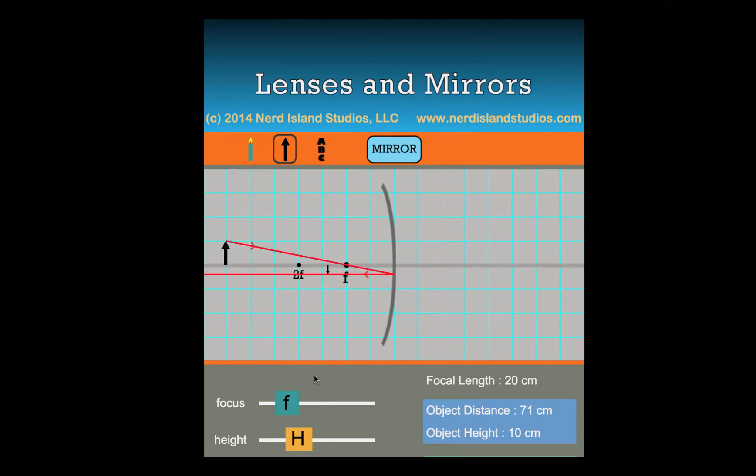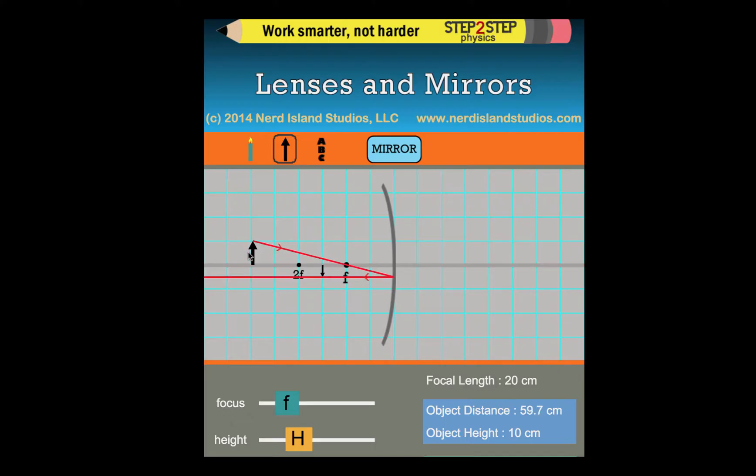Click on ray two. We watch ray two. It goes through the focal point until it hits the mirror. And once it hits the mirror, it comes out parallel. And it doesn't matter where I'm moving it. When I get to the focal point or inside the focal point, it's a little bit different. But anything up to that point will show the ray going through the focal point, then out parallel.